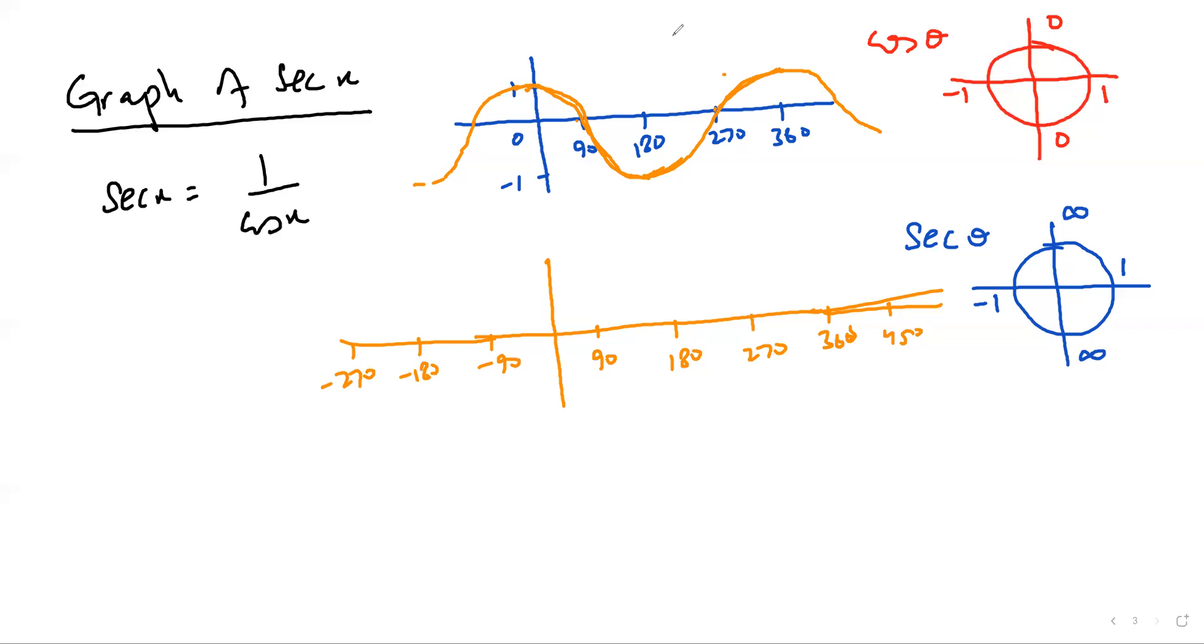You see, your cos is approaching 0 here at 90 degrees, so this will approach infinity. So we need to have an asymptote here. Wherever your cos goes to 0, this secant is going to go towards infinity.